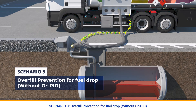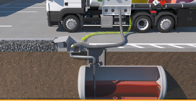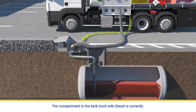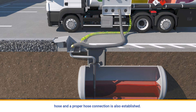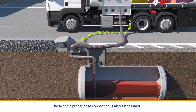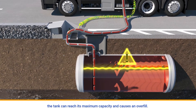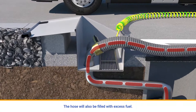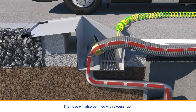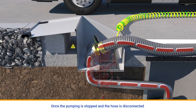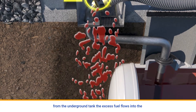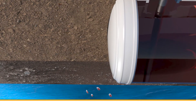Scenario 3: Overfill prevention for fuel drop without O2PID. The compartment in the tank truck with diesel is correctly connected to the diesel underground tank through the filling hose, and a proper hose connection is also established. Without the O2PID, when fuel is pumped into the underground tank, the tank can reach its maximum capacity and causes an overfill. The hose will also be filled with excess fuel. Once the pumping is stopped and the hose is disconnected from the underground tank, the excess fuel flows into the environment and can reach the underground water.